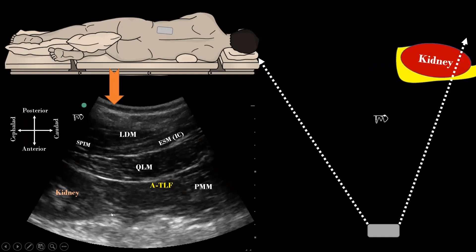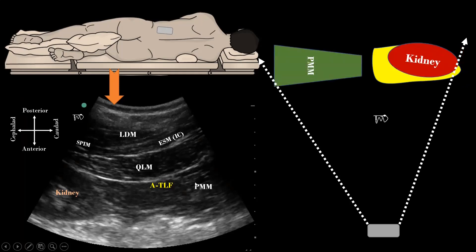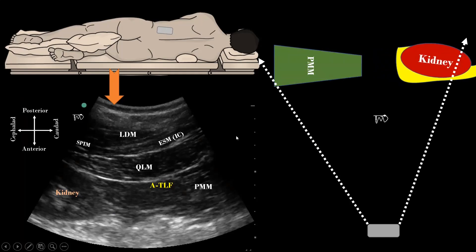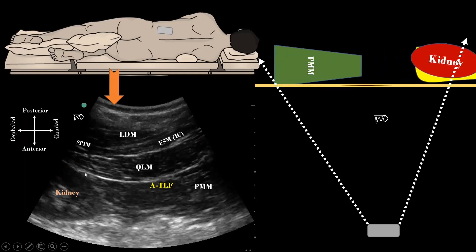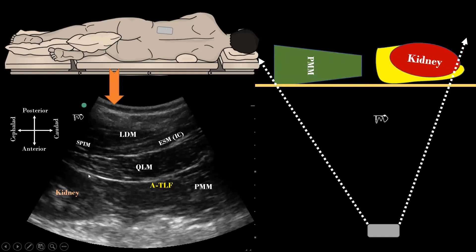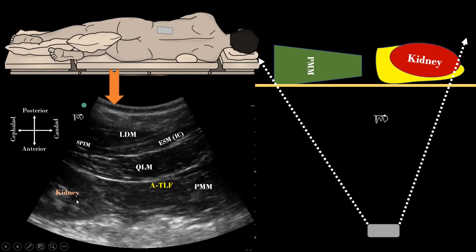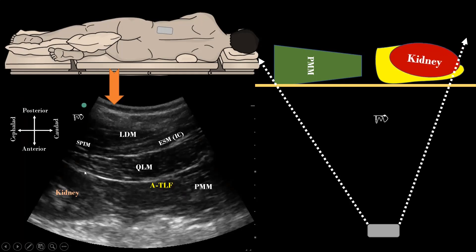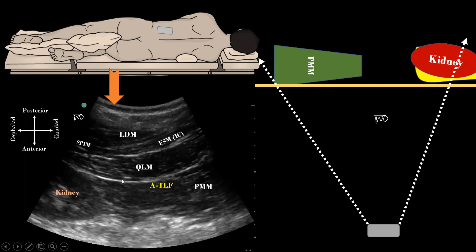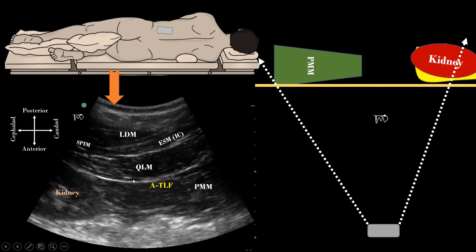The muscle caudal to the kidney is the psoas major muscle. Then identify a hyperechoic line posterior to the kidney and the psoas major muscle — this is the anterior layer of thoracolumbar fascia.